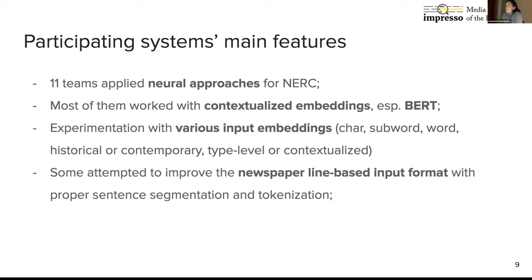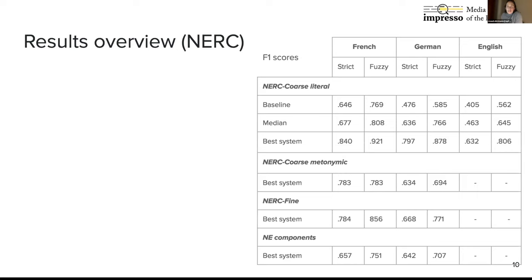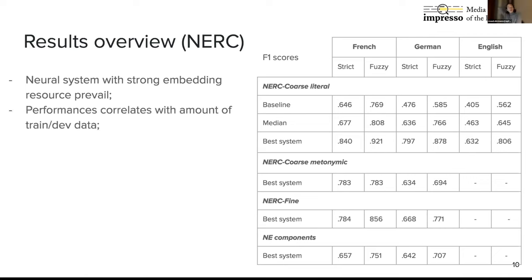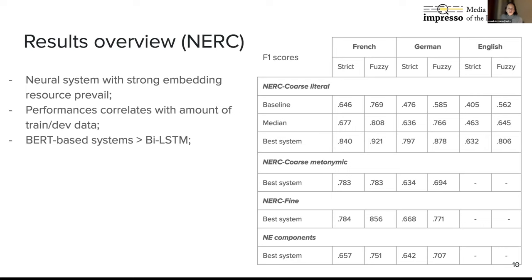Here's an overview of the results for NESC. The main point is that neural systems with strong embedding resources prevail, and they really beat by far the symbolic CRF or pattern-matching-based baseline approaches. Not surprisingly, the amount of available training data correlates with system performance. We also noticed that BERT-based systems generally perform better than BLSTM-based ones. At the level of coarse versus fine-grained, we observed quite good performances for NESC coarse — six teams had a fuzzy F-score higher than 0.8, suggesting good prospects for entity extraction on historical text when trained with appropriate and sufficient data.